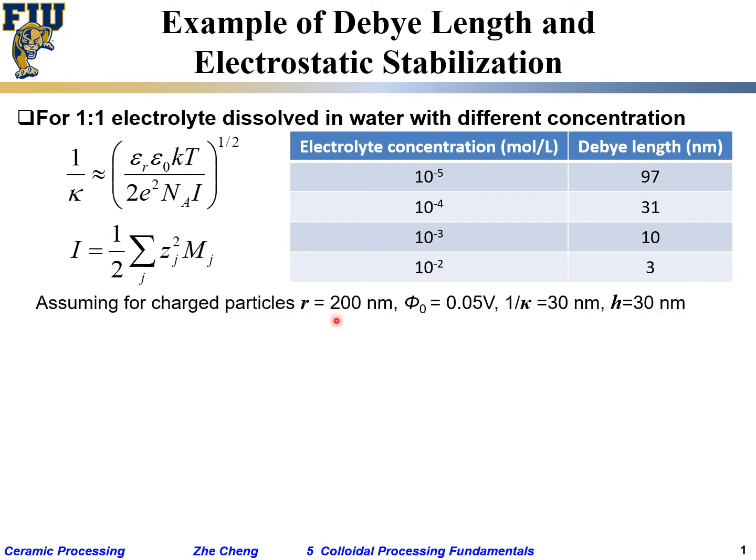If we assume we're dealing with colloidal particles 200 nanometers in size—not too fine, not too big, quite often used in ceramics like DuPont TiO2, roughly this particle size, uniform and highly uniform—and if we have a surface potential of 50 millivolts and one over kappa of 30 nanometers, and the separation distance is also 30 nanometers, we are using something like this.